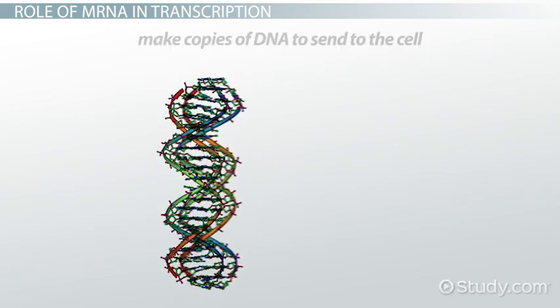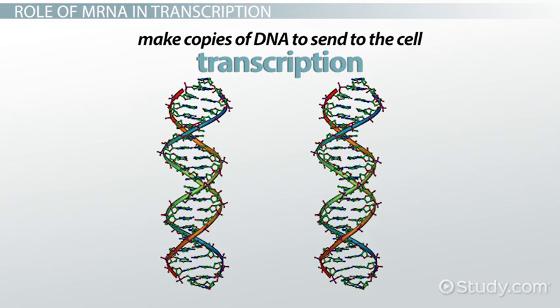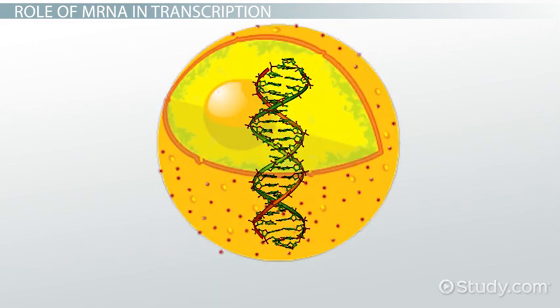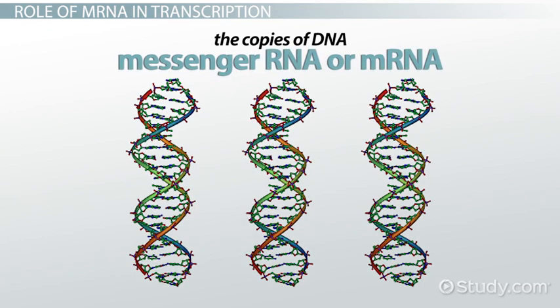To make protein, we first need to make copies of DNA to send to the cell—a process called transcription. The original DNA is held safely in the nucleus, and the copies of DNA are called messenger RNA, or mRNA.